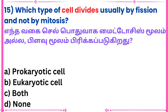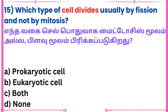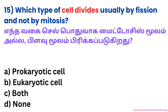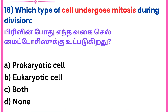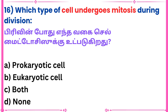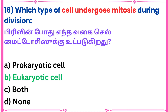Fifteenth question: Which type of cell divides usually by fission and not by mitosis? Answer: Eukaryotic cell.